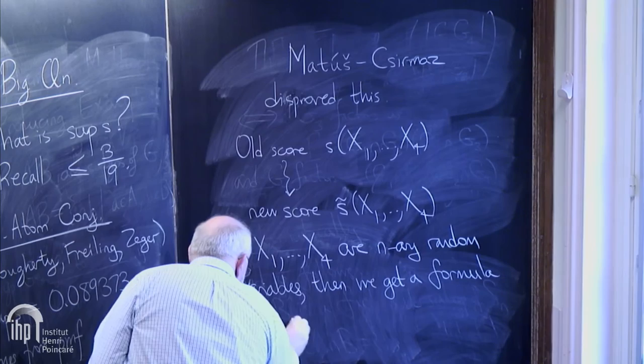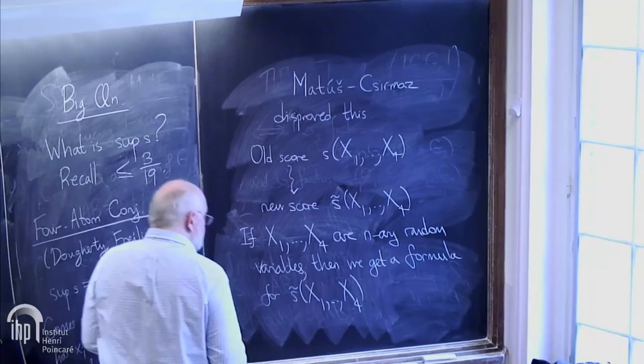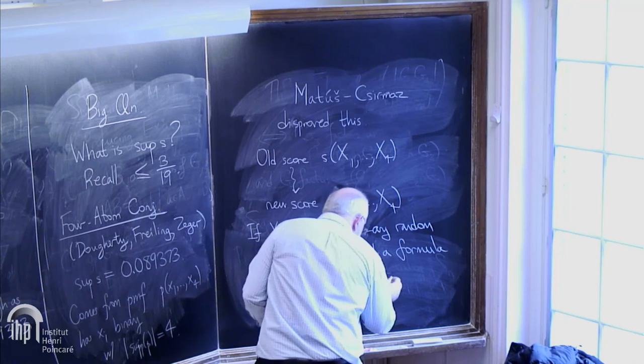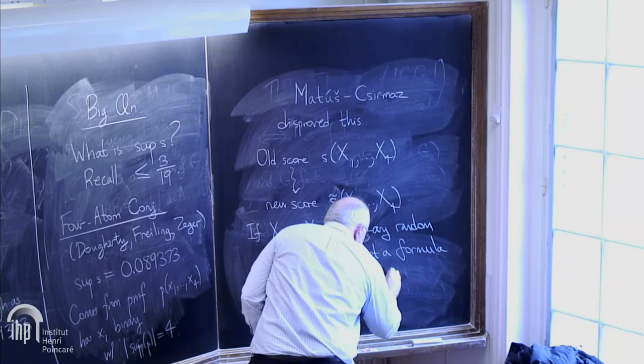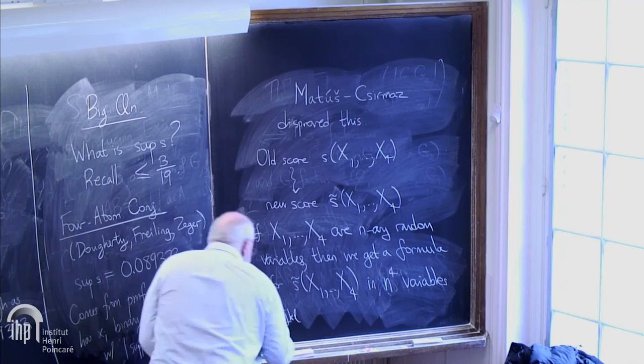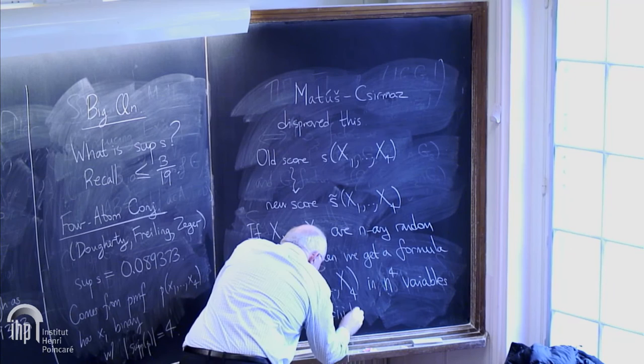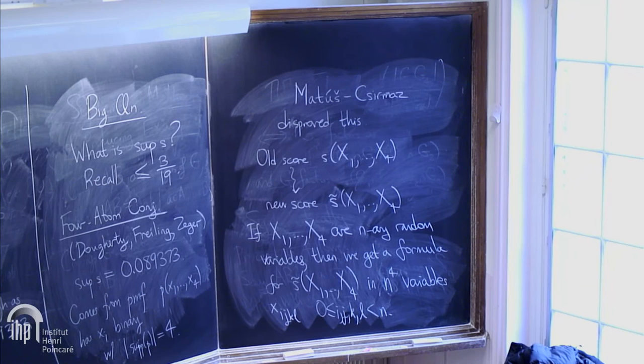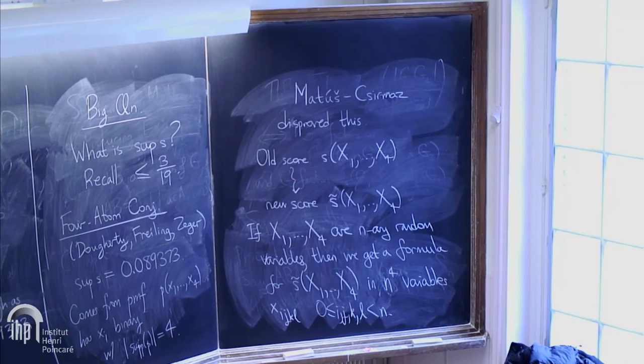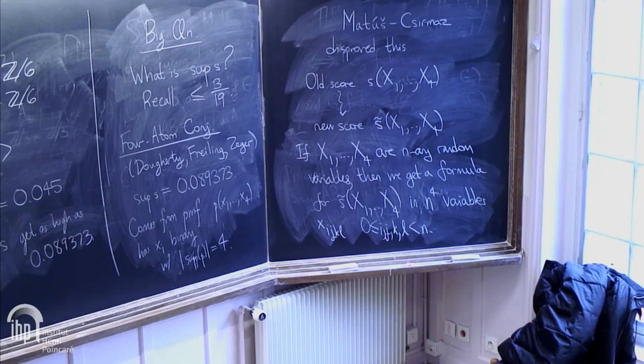We have the old score, S of the four random variables. What they showed is you can get a new score, a new Ingleton score. This is the score by studying the associated polymatroids. If X1 through X4 are N-ary random variables, then Tingting and I, and probably others, get a formula for S tilde, the new score. Basically, you get this function. The numerator—in the N to the four variables, you have N to the four variables X i,j,k,L for your PMF. What you want to do is maximize that expression as the X i,j,k,L vary over non-negative real numbers with sum to one.